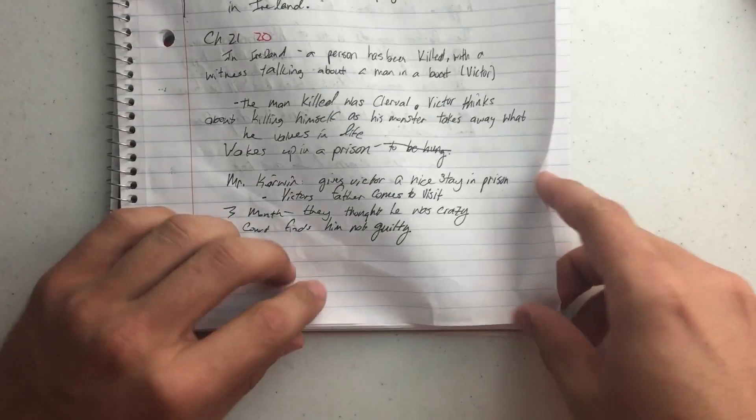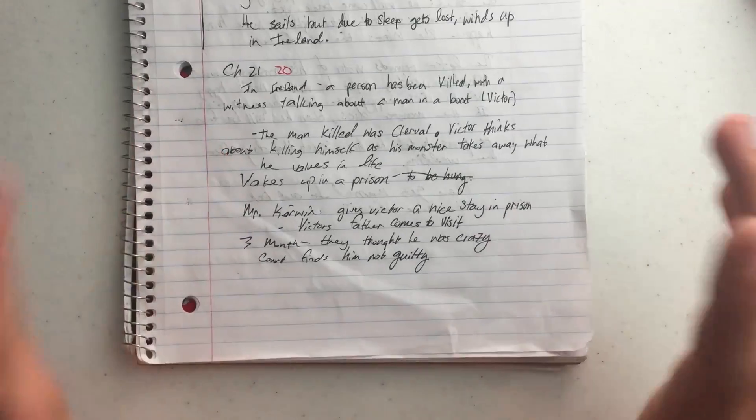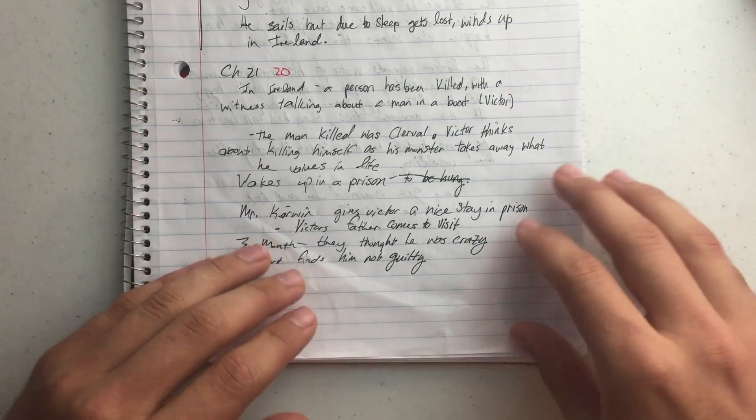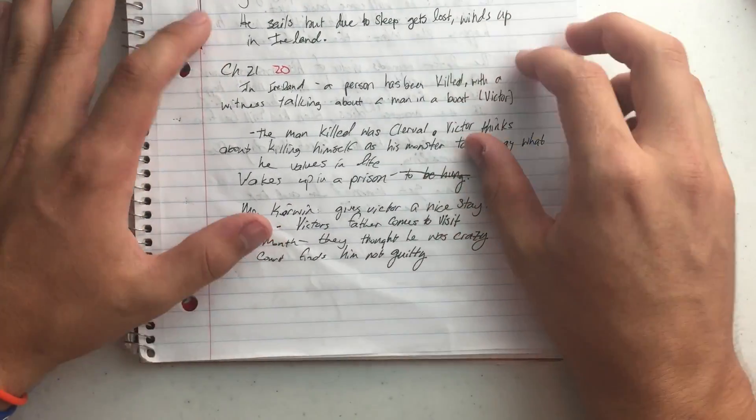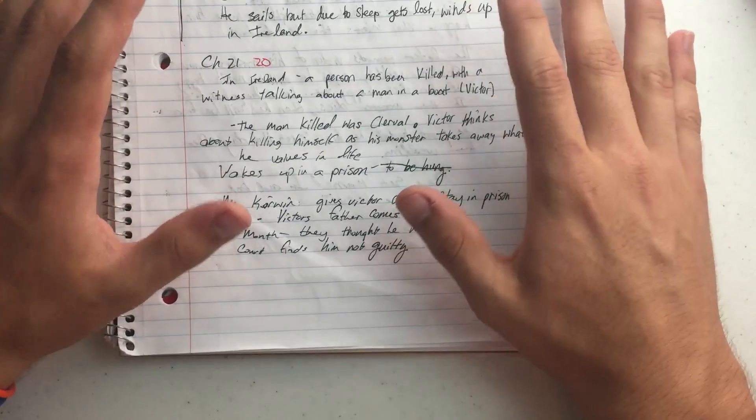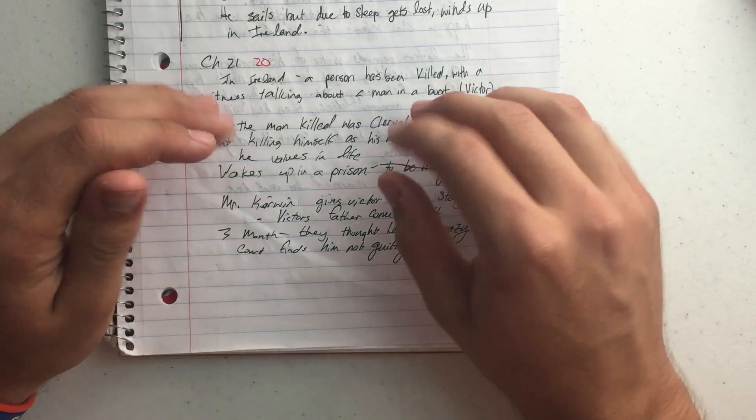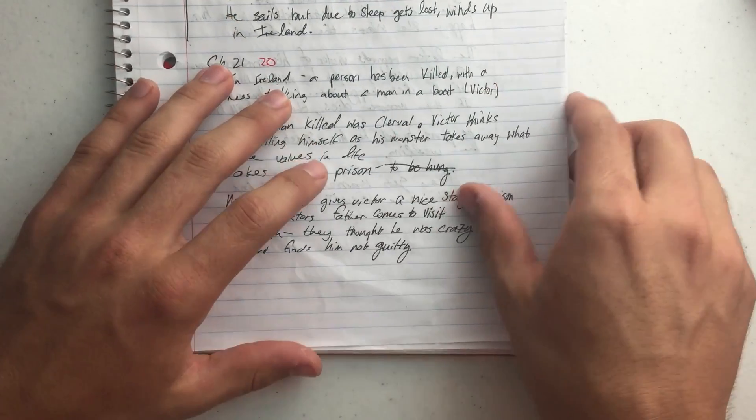The courts find him not guilty. In the next chapter, we kind of see his dad come into the picture, and he leaves this place. But in chapter 21, he's in Ireland, gets put in jail and in some trouble because of the monster killing his buddy in that town.